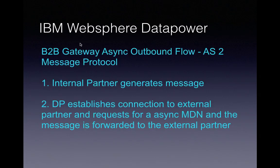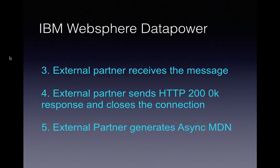The first step is the internal partner generates the message which needs to be transferred to the external partner. Next, DataPower establishes a connection to the external partner and requests an asynchronous MDN — MDN stands for Message Disposition Notification. The message is then forwarded to the external partner.